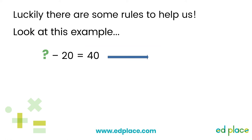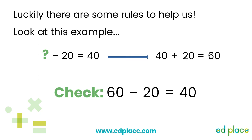There are some really useful rules to help us find missing numbers. Let's look at this example: something take away 20 equals 40. Here's the great rule — if there is a missing number at the beginning of the sentence, do the inverse, so we will need to do an addition sentence. Let's move the numbers around: 40 plus 20 equals 60. So our missing number is 60. Let's put that back into our original subtraction sentence and check: 60 take away 20 equals 40.